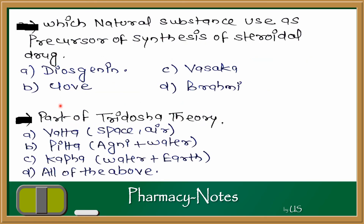Next question: which natural substance is used as a precursor for the synthesis of steroidal drugs? The options are Diosgenin, Vasaka, Brahmi, and Clove. Diosgenin can be used as a precursor for steroidal drugs like progesterone and contraceptives. Vasaka, Brahmi, and Clove are used for memory or other purposes. The answer is A — Diosgenin.